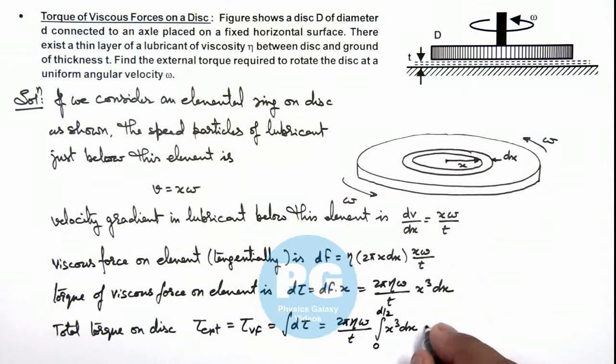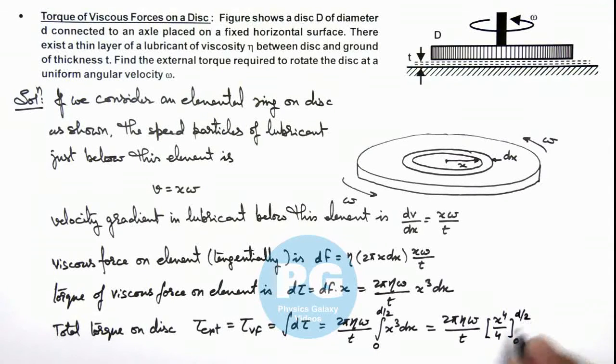And when we integrate this it becomes x⁴/4, so this is 2π eta omega by t, and it will be x⁴/4 and we put limits from zero to d/2. And when we substitute the limits, the final result will be π eta omega d⁴ divided by 32t. That is the result of this problem.